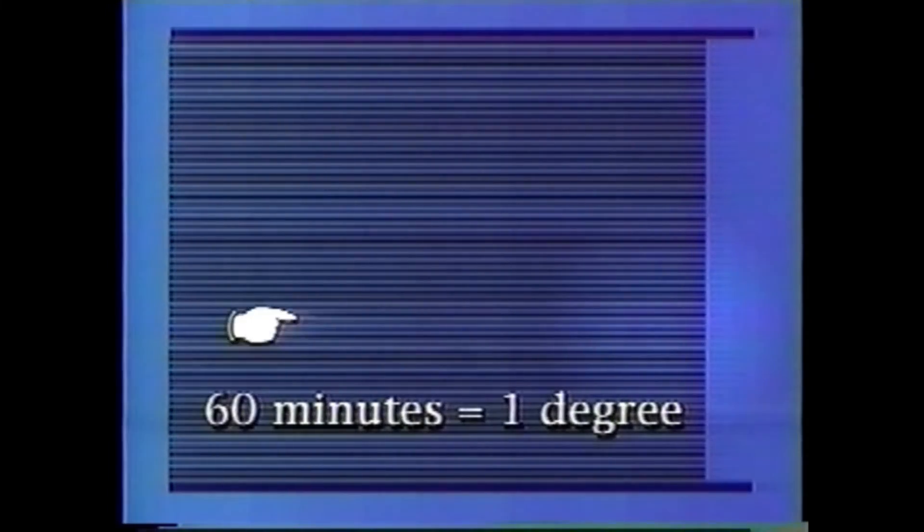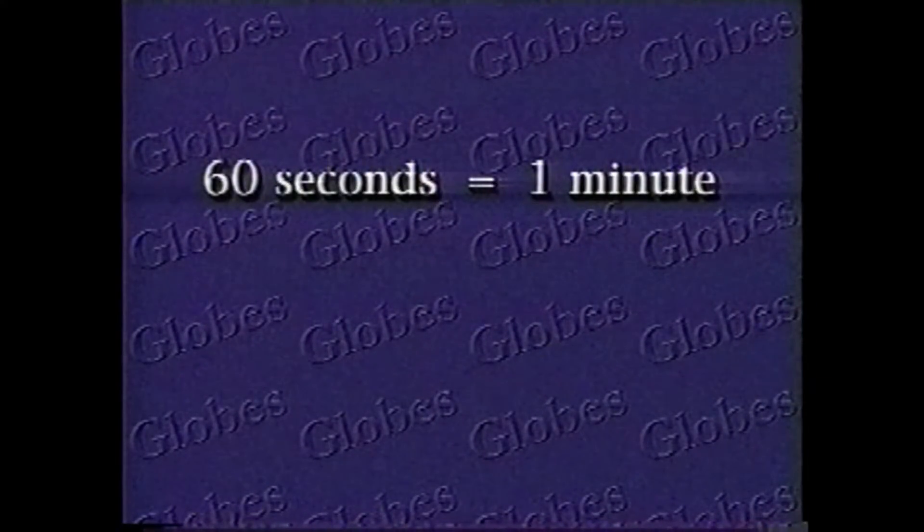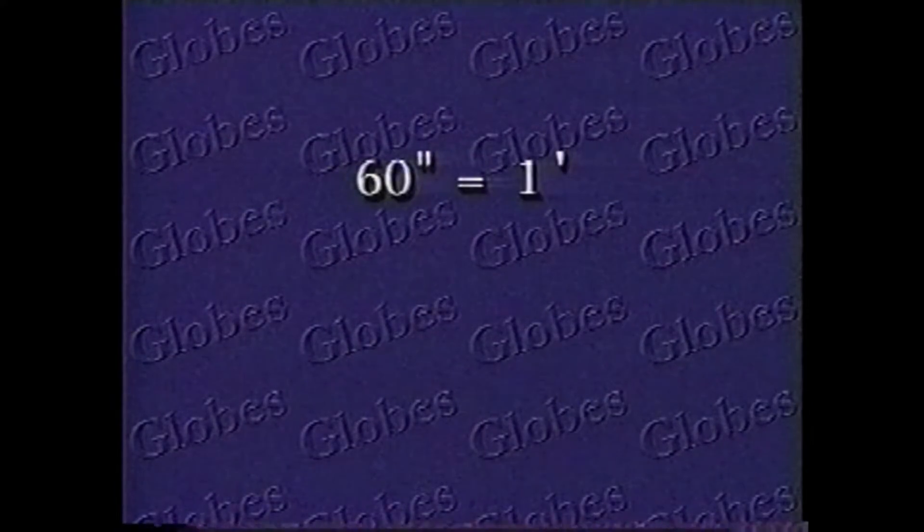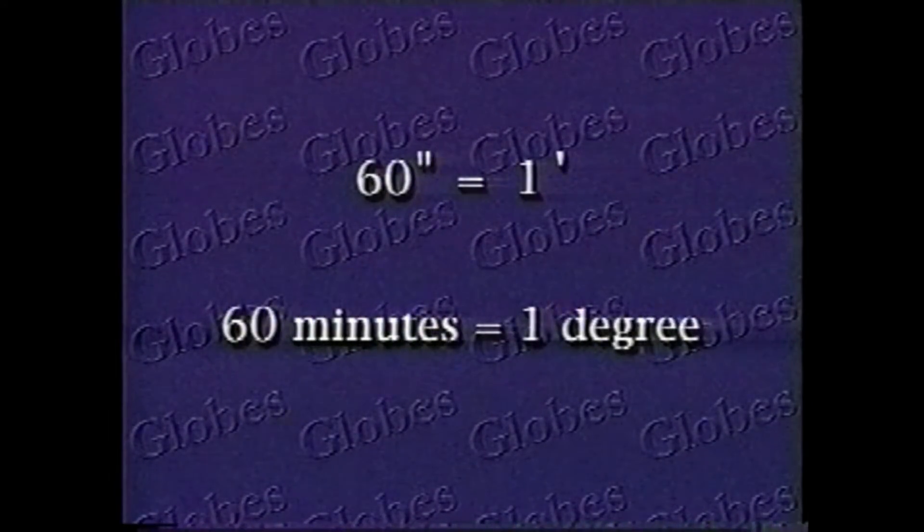Each degree can be further broken down into minutes. There are 60 minutes in one degree. Minutes can be broken down into even smaller measurements known as seconds. There are 60 seconds in one minute. So to put it all together: 60 seconds equal one minute, and 60 minutes equal one degree.